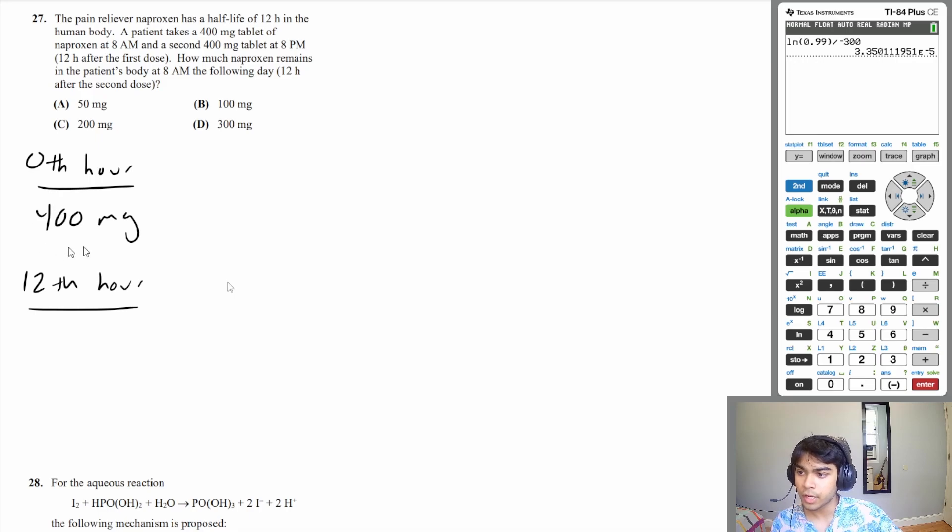Well, half of that 400mg that you took initially is going to decompose since your half-life is 12 hours. So that's going to be 200mg plus the additional 400mg that you took on the 12th hour. So that is 600mg. And so we're asked how much remains at 8am the following day, which is 12 hours after this second hour. Well, that's going to be the 24th hour. So that means one half of this value is going to remain. So that is going to be 300mg, which is answer choice D.